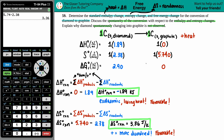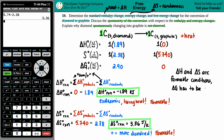Now we discuss spontaneity with respect to enthalpy and entropy. Since both delta H and delta S are in favorable conditions, there's no way we can get an unfavorable Gibbs free energy. If both H and S are favorable, delta G must also be favorable. A negative delta G is favorable and means the reaction is spontaneous.